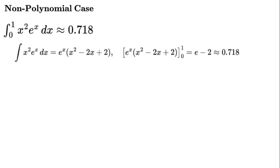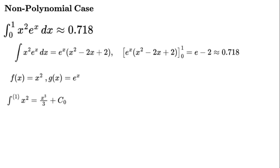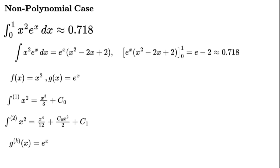Main formula with f(x) equals x squared, g(x) equals e to the power of x. Antiderivatives: the integral of x squared to the power of 1 equals x cubed over 3 plus c₀; the integral of x squared to the power of 2 equals x to the power of 4 over 12 plus c₀ times x squared over 2 plus c₁. And g to the power of k of x equals e to the power of x.